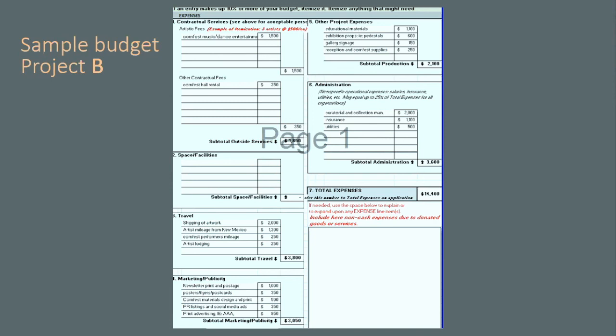They included reception supplies in other project expenses. Generally it's okay to include in the budget, but it's not something we can fund. It may have been better to put that in the text box. If this budget had $5,000 for reception supplies, we would likely have to go back to the applicant and have a conversation about editing their budget or clarifying what that $5,000 entails.